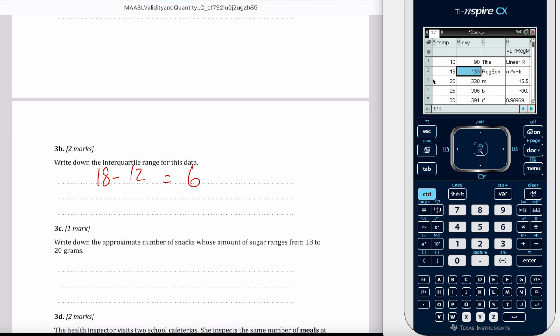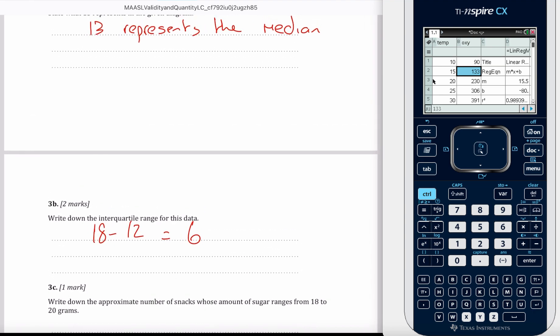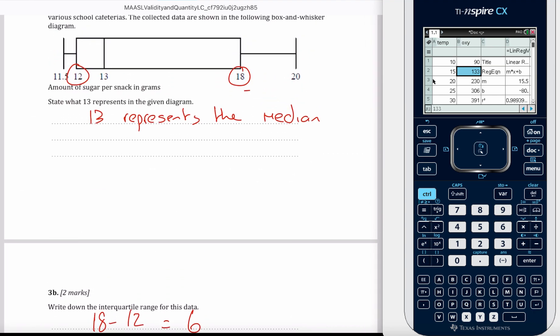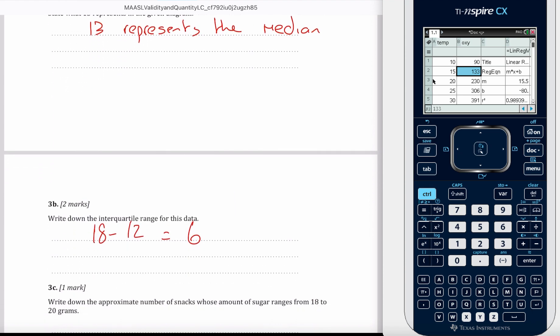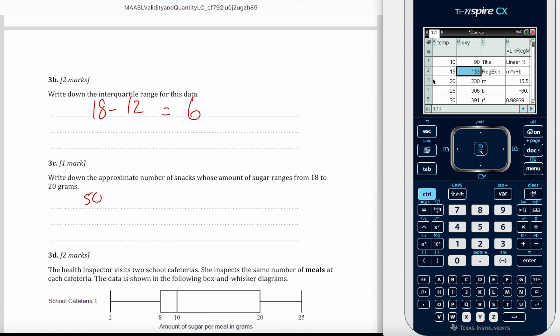Write down the approximate number of snacks whose sugar ranges from 18 to 20. So 18 to 20, between these two values is 25% of the data. We were asked 500, so it's 500 divided by 4, and that's about 125 values.